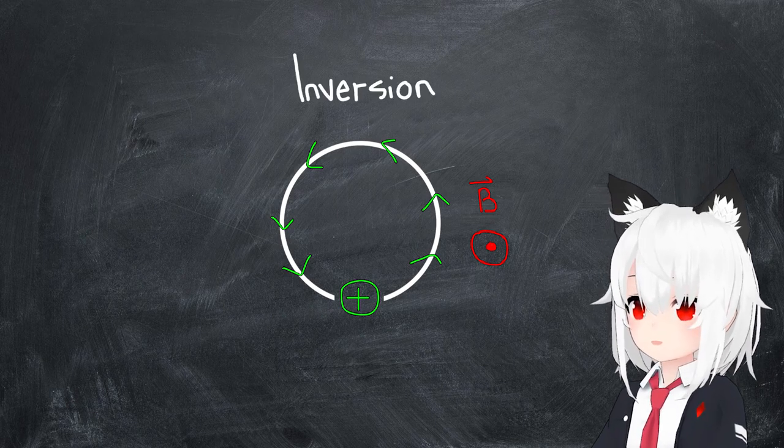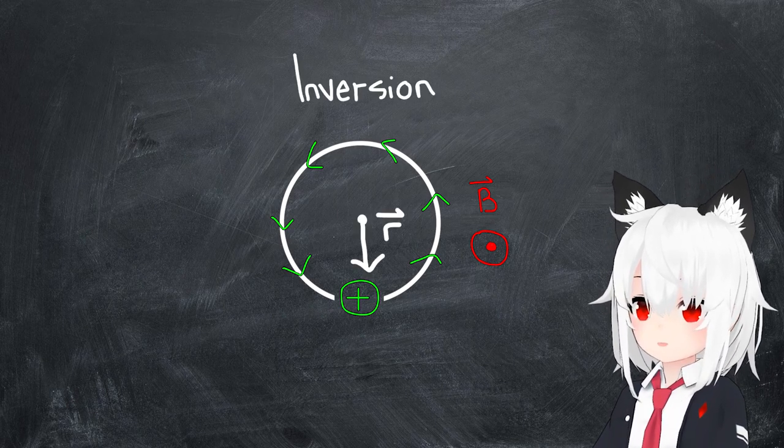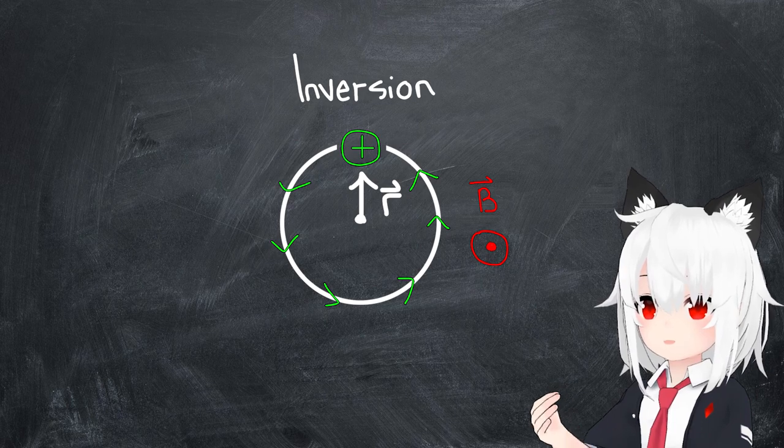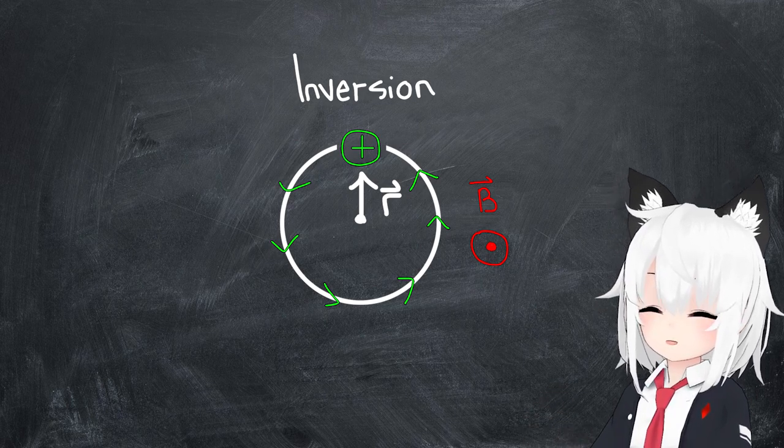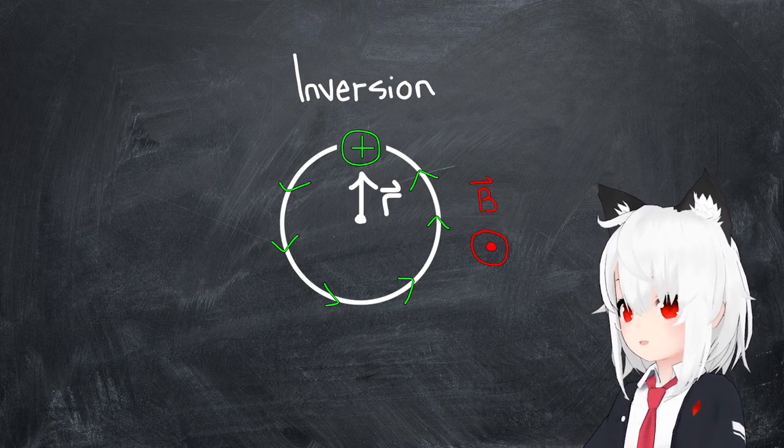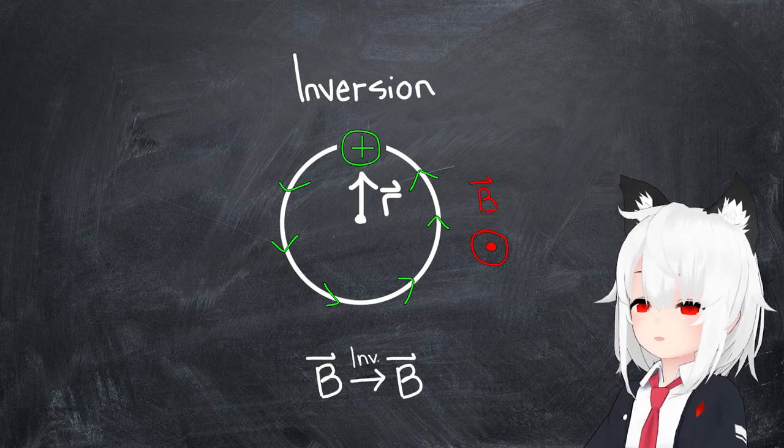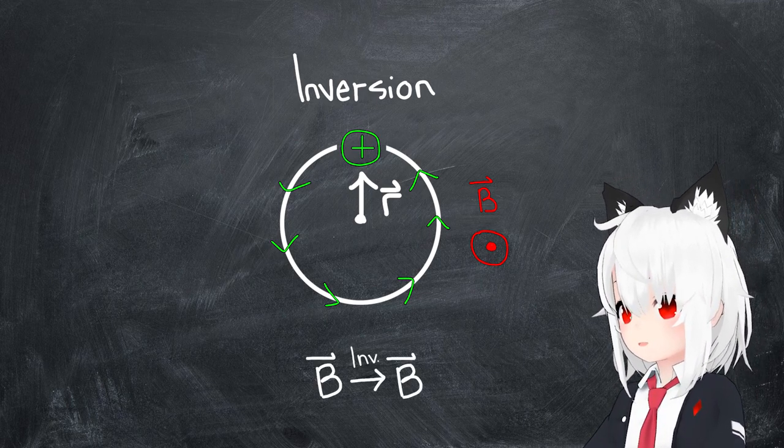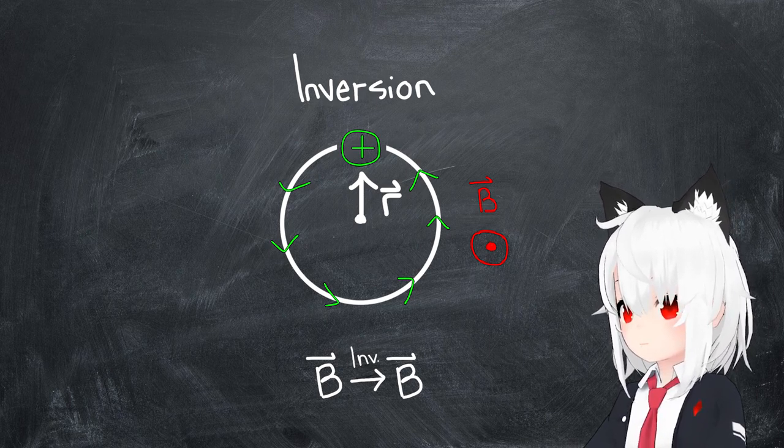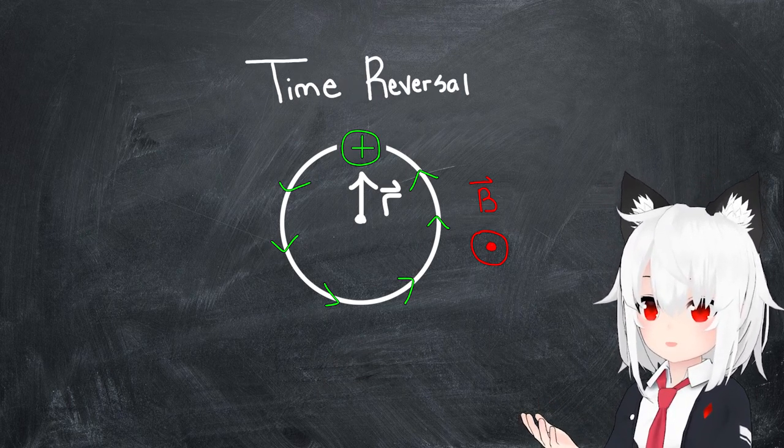The result is that the magnetic field actually doesn't end up changing upon this inversion operation. But what about the time reversal operation? In this case, the position of the particle remains fixed, but the direction of its velocity vector changes sign, resulting in a change in chirality from a counterclockwise one to a clockwise one.